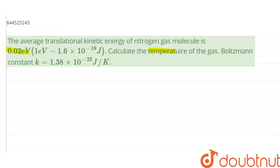We have to calculate the temperature of the gas. The Boltzmann constant is also given in the question, and the value of k is 1.38 × 10^-23 joule per kelvin. Now this question is from kinetic theory of gases.